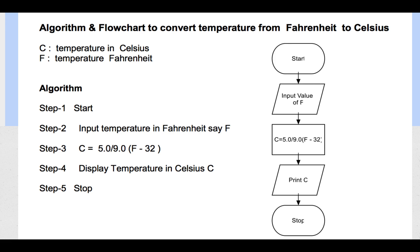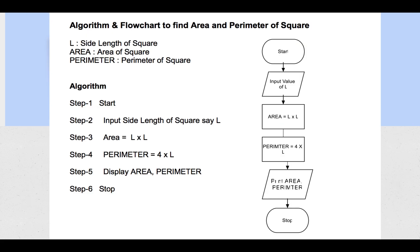The Fahrenheit to Celsius conversion is just the other way around. Next, the algorithm and flowchart to find the area and perimeter of a square, where L is the side length. The steps are: Start, input side length L, compute area as L times L, compute perimeter as 4 times L since there are 4 sides each of length L, display area and perimeter, and stop.